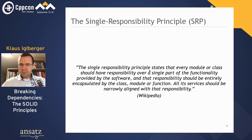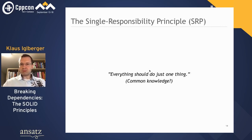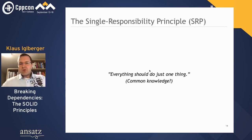Unfortunately, this principle has been simplified and perhaps distorted into something like: everything should do just one thing. That is what I would call the common knowledge. Although this may sound simpler, it's probably even more vague. 'Should do just one thing' — what is this one thing? Really hard to answer. So I was looking for a better explanation of what SRP is truly about.